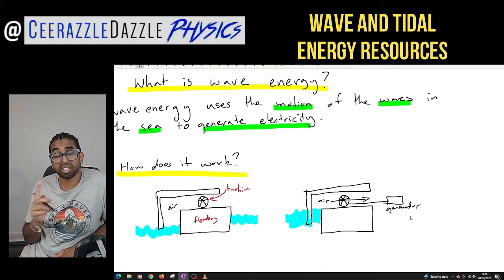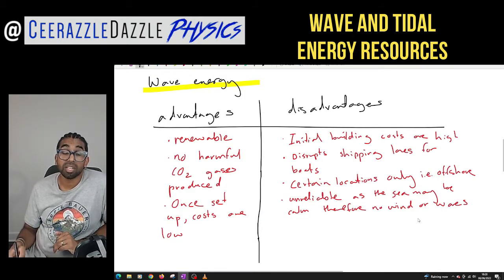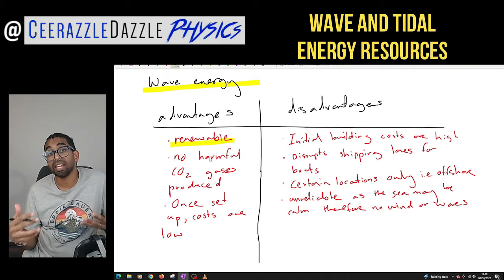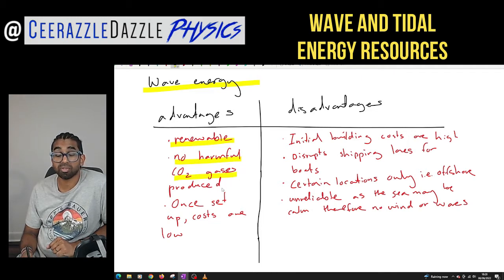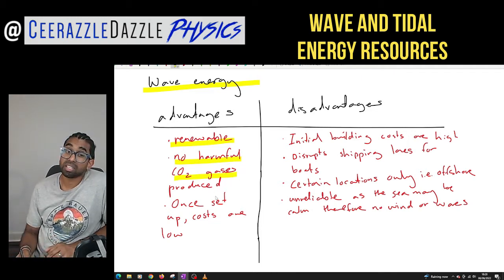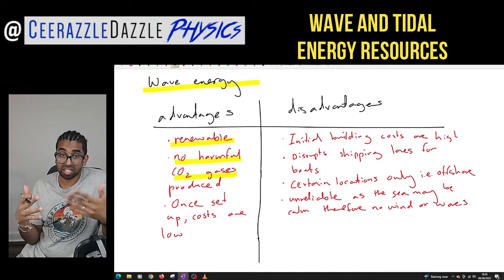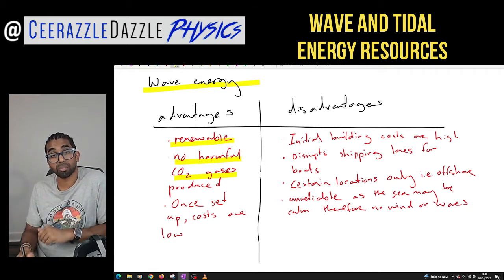What are the advantages of wave energy? First, it is renewable — it can be used again and again and it won't run out. Second, there are no harmful carbon dioxide gases being produced. Third, once you've set up the devices in the water, the running costs are low.